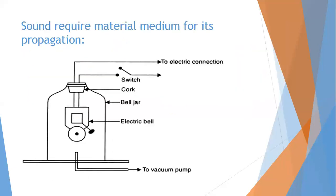Sound needs a medium to travel — that is why sounds are mechanical waves. In this diagram, you see a bell jar in which an electric bell hangs. When we switch on the bell, it rings and we can hear the sound. But if we pump out the air from the bell jar, the sound dies and we can't hear it. This shows that sound requires a medium — that is air — to travel.